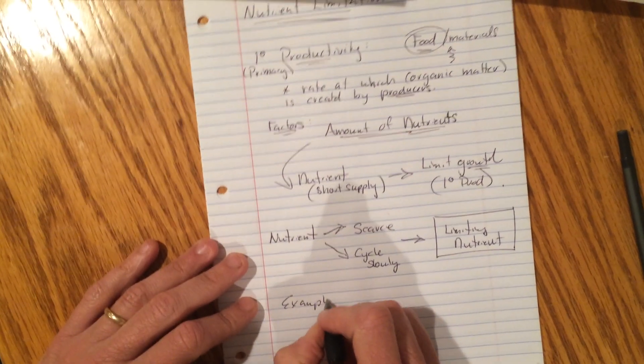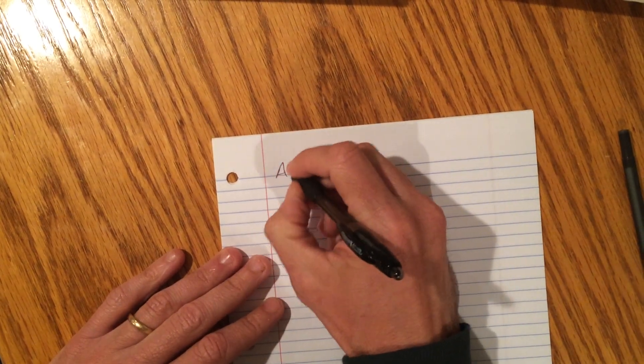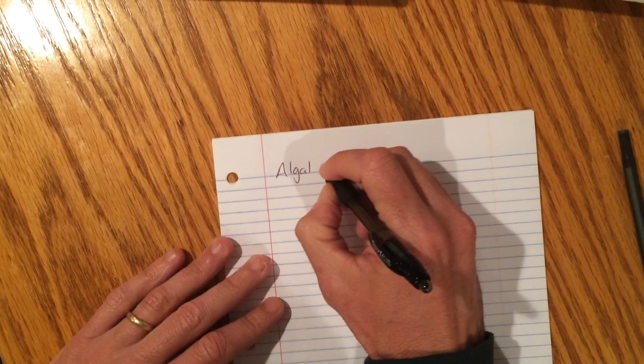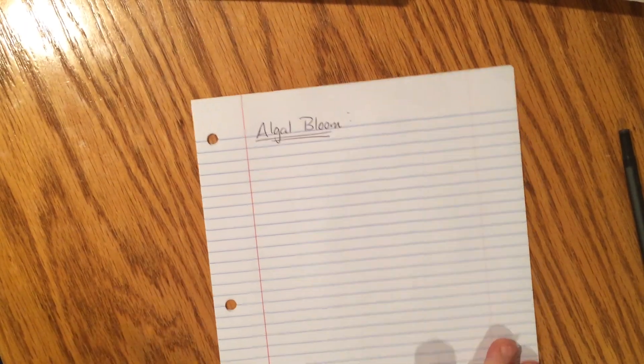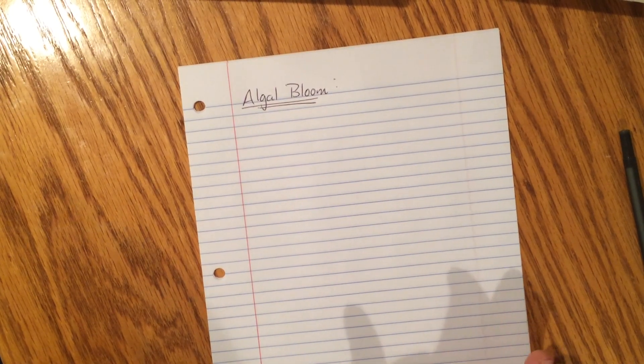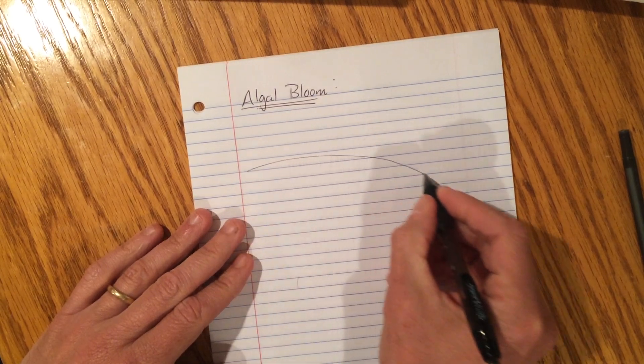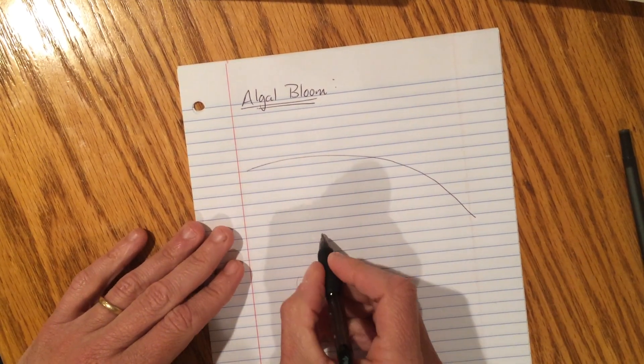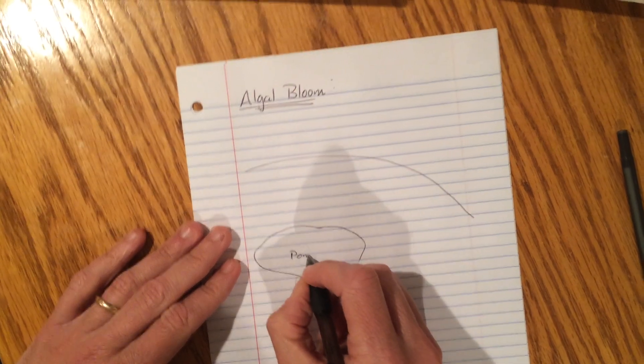And I'll wrap up the unit with this. Let's take a look at an example of how primary productivity through a limiting nutrient can affect the ecosystem. And we're going to do something called an algal bloom. And although you may not have heard of this before, you've seen it. So I'm going to draw a little picture, and you guys know I am not a very good drawer. So I'm going to do, we'll just do it like a big hillside like that, and then sitting at the bottom right here, we have a pond.